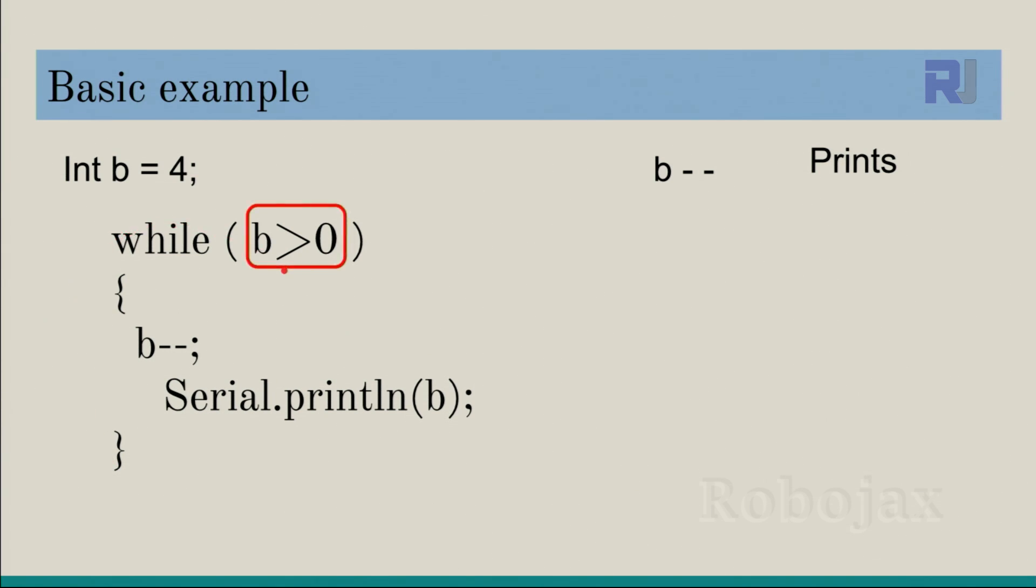First it compares b, then it comes to this section. First we decrement, b becomes three, and then we print it. This line will print b for us. After that we go back here. Now b is three. Is three bigger than zero? True. If this is true, then continue. Come here and then decrement. When it decrements, b now becomes two, then this line will print it for us.